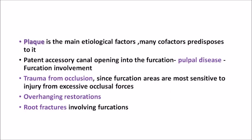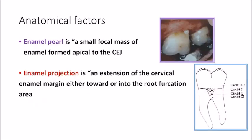Coming to etiology, plaque is the main etiological factor. Furcation involvement is not a separate disease entity — it is just like periodontal disease affecting the furcation area. Just because the furcation area has a complex anatomy we discuss it as a separate chapter. Many factors predispose the accumulation of plaque in this area. Other factors include patent accessory canals opening into the furcation — so pulpal disease can lead to furcation involvement — trauma from occlusion, overhanging restorations, and root fractures involving the furcation. All these factors help plaque accumulate in that area.